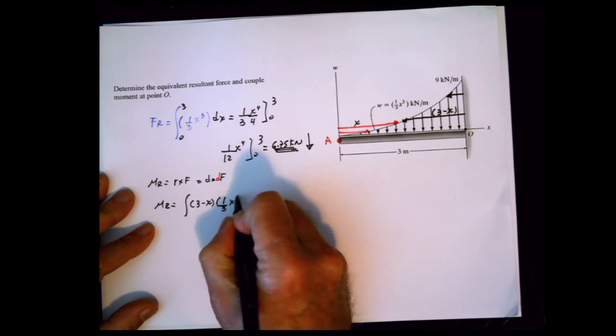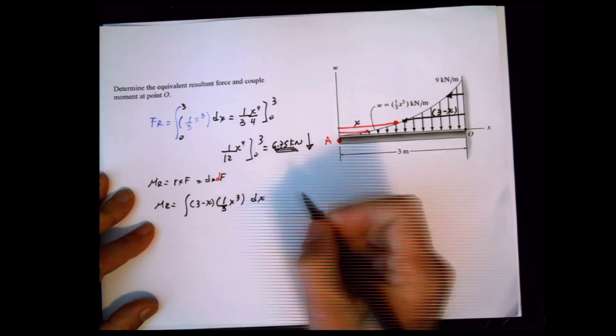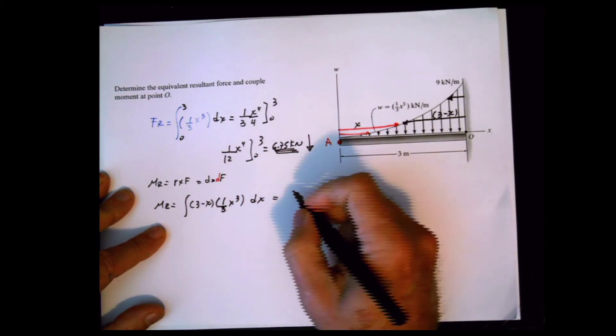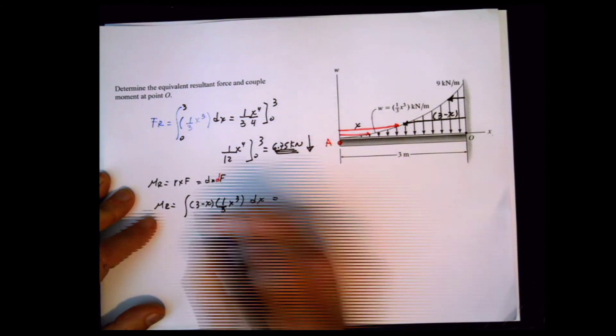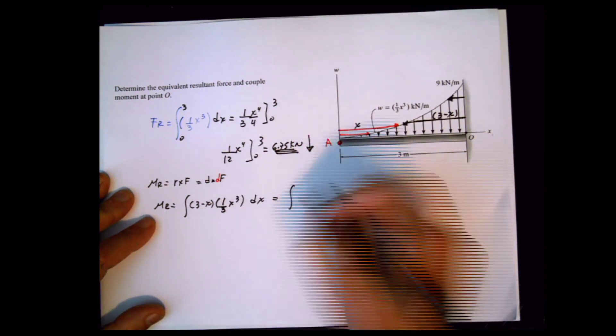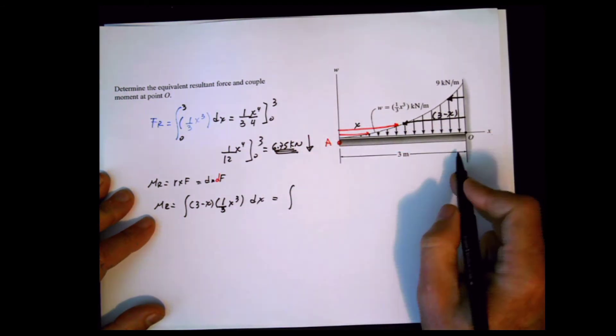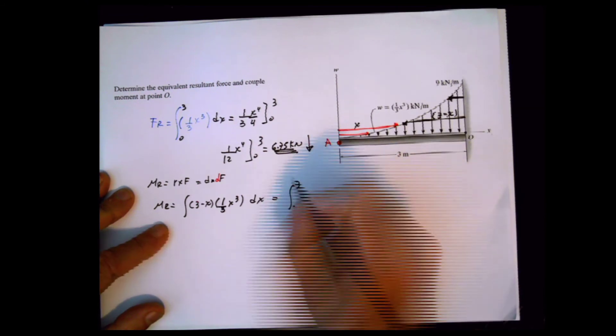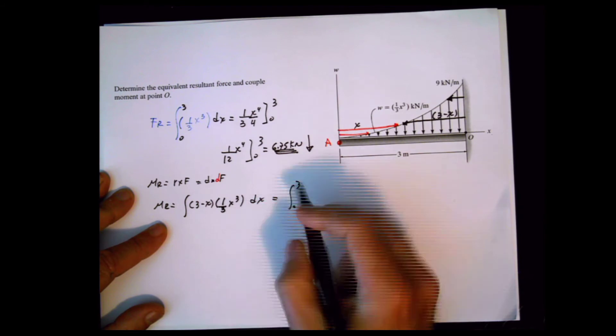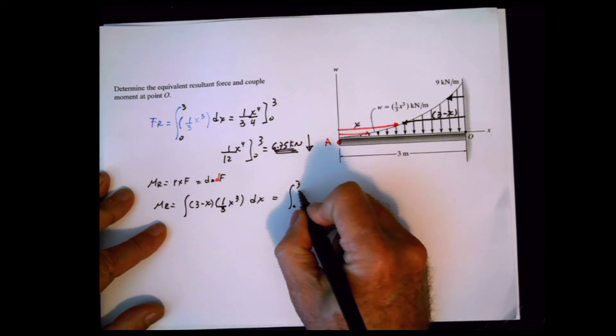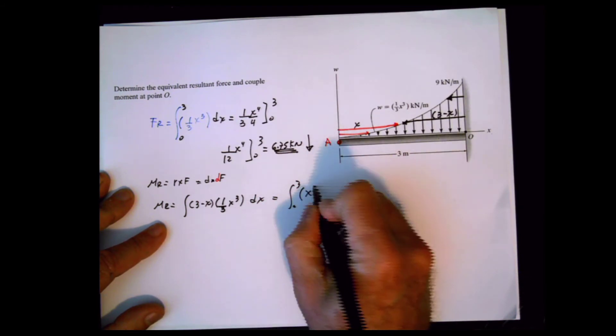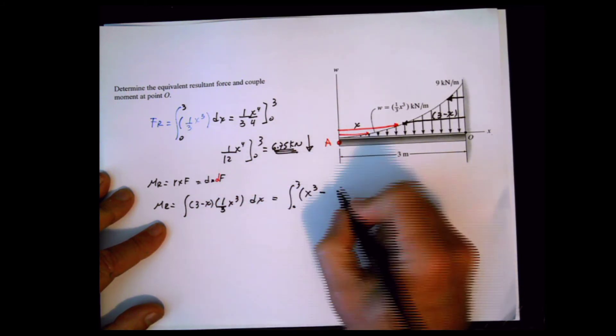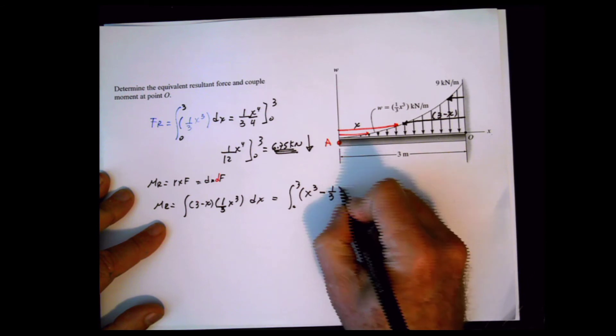Once you solve this, you can break it into two integrals from 0 to 3. Multiplying gives the integral of x cubed minus one-third x to the fourth dx.